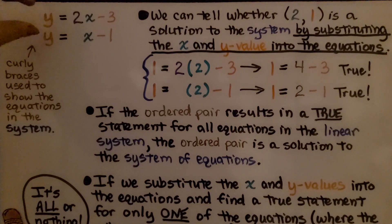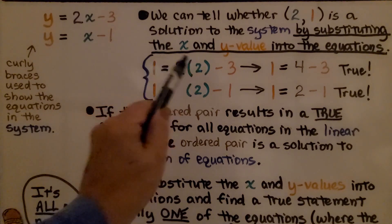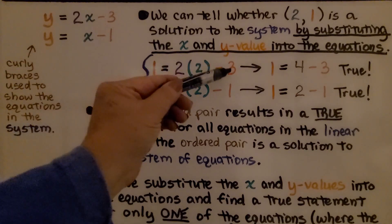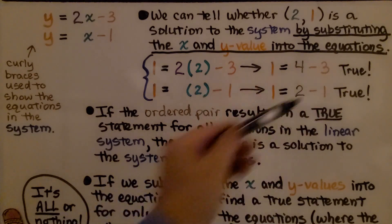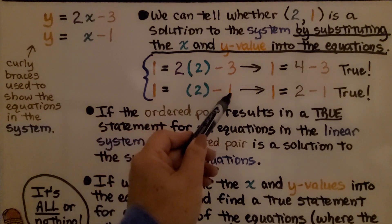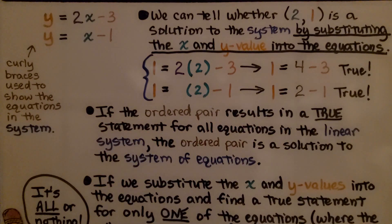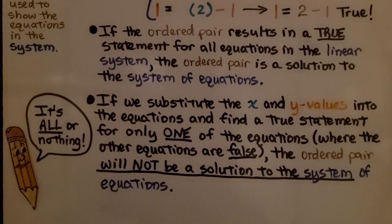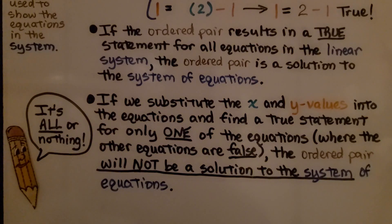It could be 2, 3, or 4 equations stacked on top of each other. We can verify whether x equals 2, y equals 1 is a solution by substituting those values into each equation. Substituting gives 1 equals 2 times 2 minus 3, which simplifies to 1 equals 4 minus 3 — true. And 1 equals 2 minus 1 — also true. If an ordered pair results in a true statement for all equations in the system, it is a solution. If it's only true for some equations and false for others, it is not a solution to the system.